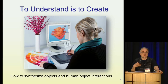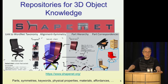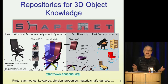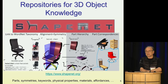One effort in my group that's been going on for a few years is the creation of the ShapeNet repository of 3D objects. This is mostly everyday objects — things like tables, chairs, cars, aeroplanes, bicycles, forks, knives, and lamps. What's interesting about ShapeNet is it doesn't just try to represent the 3D geometry, but to represent the semantics of these objects: their structure, their parts, their symmetries, their materials, their appearance, and more and more their functionality.